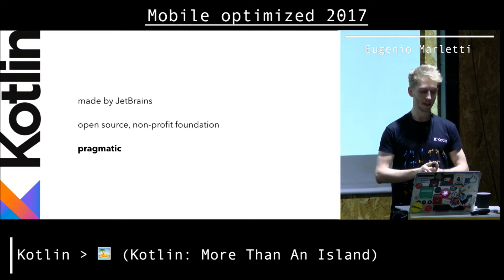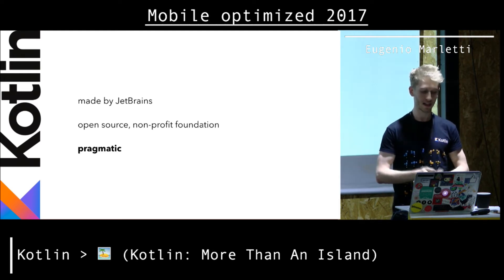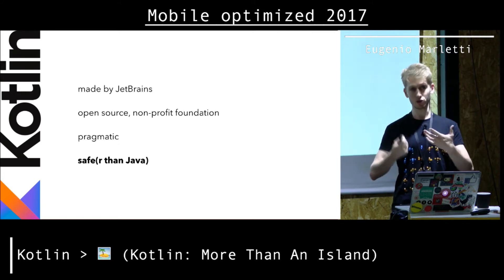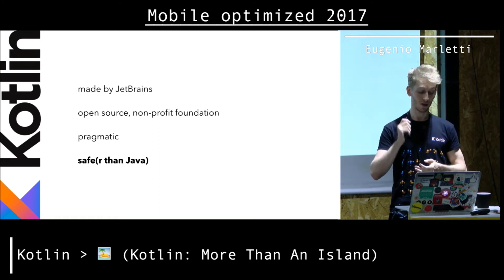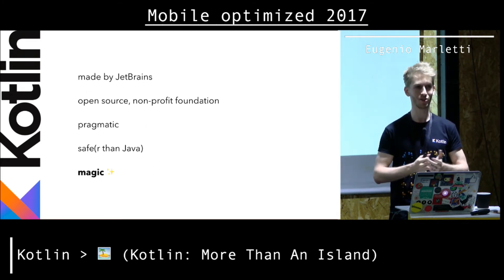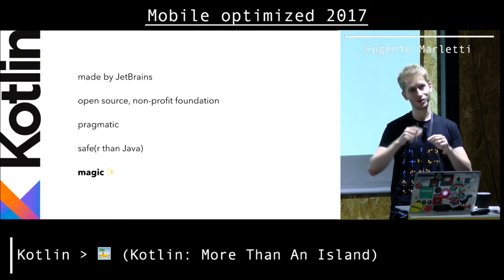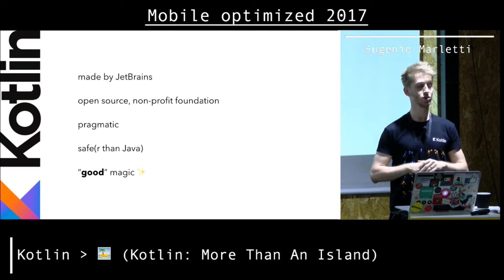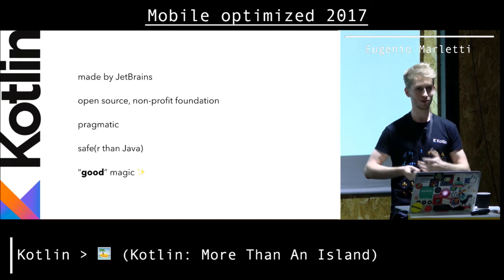Kotlin is pragmatic. It's often described this way because it doesn't come from an academic world — it was made for a specific use case, used every day, and that's what it is. It's essentially effective Java baked into the language. And it's safe, or at least safer than Java, in the sense that it prevents you from shooting yourself in the foot in many different ways, or at least encourages you to use best practices in ways that Java just doesn't. Also, it has magic — and there are different kinds of magic. There's bad magic, like Groovy, Scala, or Ruby, where they allow you to do anything, but finding out what's really going on is hard.